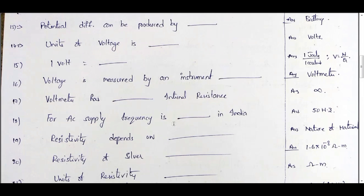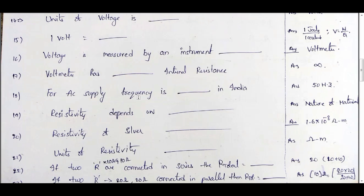Very important bit: for AC supply, the frequency in India is 50 hertz. In case of the US (America), the frequency is 60 hertz. Frequency is the number of cycles per second in case of electricity.